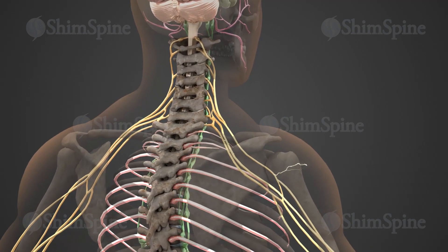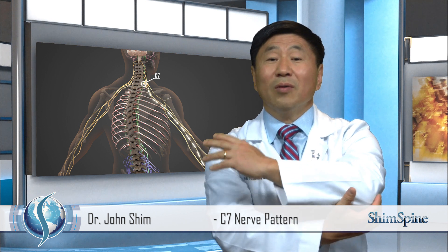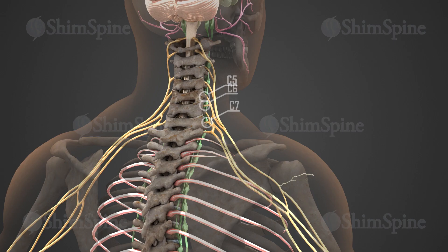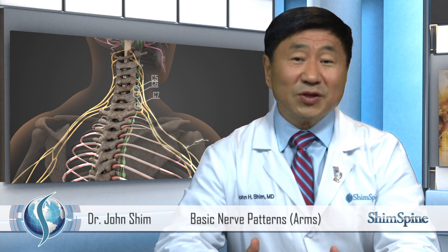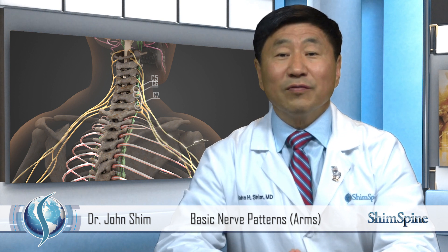There's also the C7 nerve pattern. It's associated with strength to your triceps muscle, the ability to straighten out. It's associated with the reflex along the triceps where you hit the end of the elbow and the arm moves, and it's also associated with sensation. The C7 nerve pattern is the middle finger. Each individual nerve typically follows a pattern, and the nerves in the neck are associated with specific muscle groups, specific areas of sensation, and for some, associated with certain reflexes.